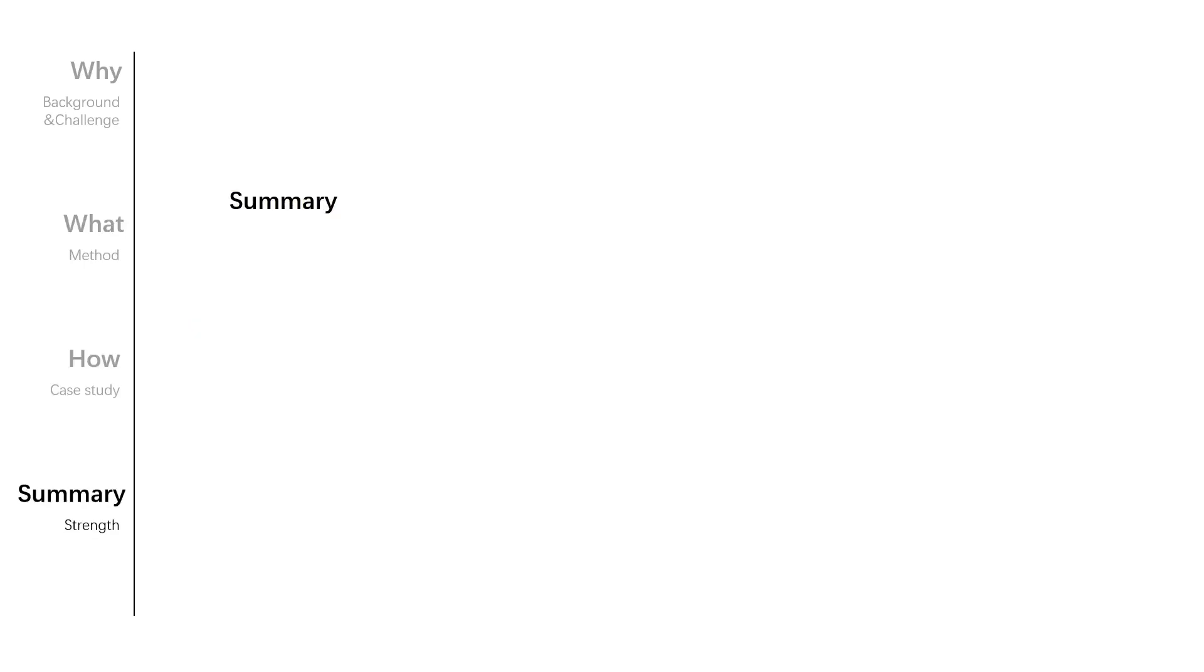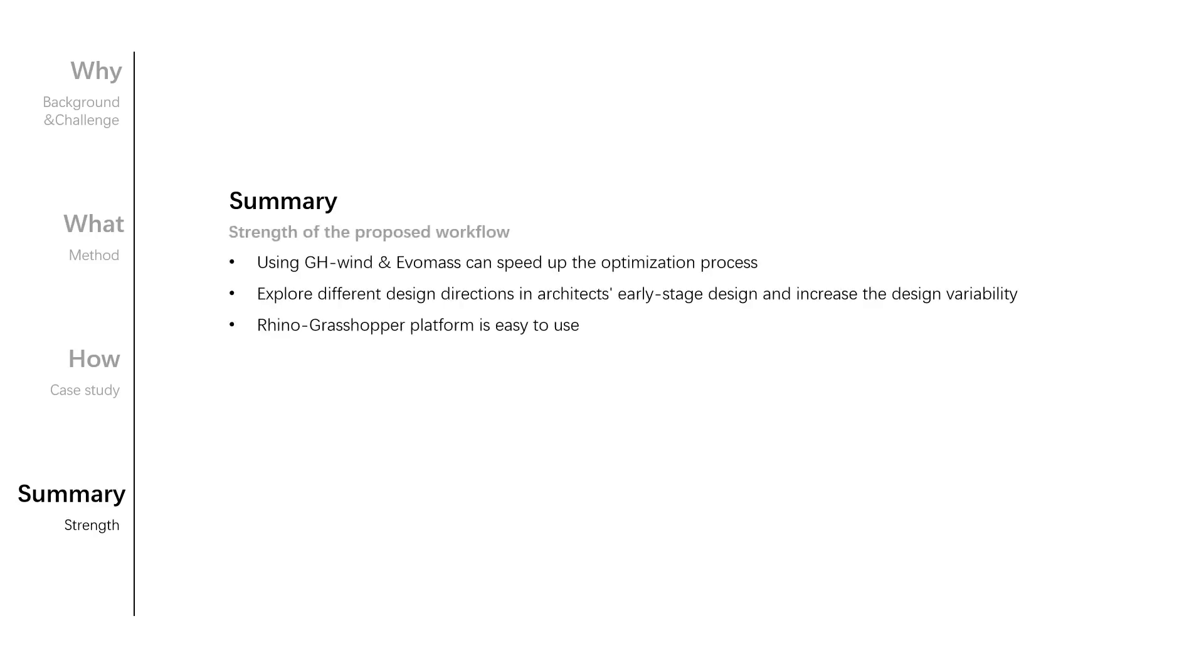So here comes the summary of the research. The strengths and weaknesses of the workflow can be shown as follows. As for the strength points, first, using GH_Wind and EvoMass can speed up the optimization process. Second, the workflow can explore different design directions in architect's early stage design and increase the design variability. Third, Rhino-Grasshopper platform is easy to use.